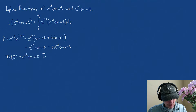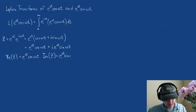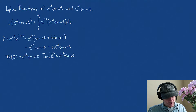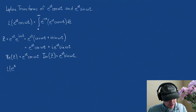And the imaginary part of z is e to the at sine omega t. So it seems to me that another route that might be much easier to take would be to find the Laplace transform of e to the at times e to the i omega t. Let's try that then.